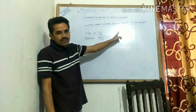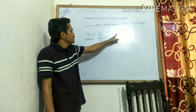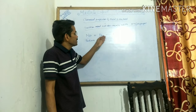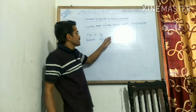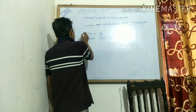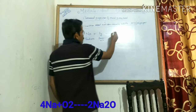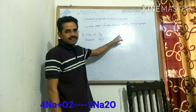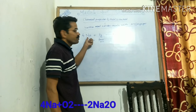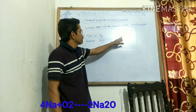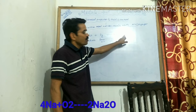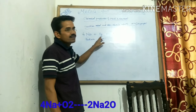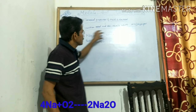Now this equation is not balanced, so first of all we balance this equation. Put 4 here and 4 here, and now put 2 here. So sodium becomes balanced — 4 atoms on each side. Oxygen is also balanced with 2 atoms on each side. So this equation is balanced.